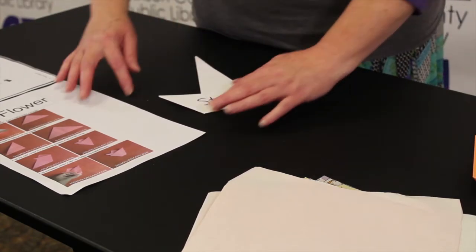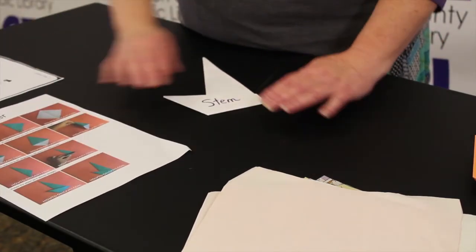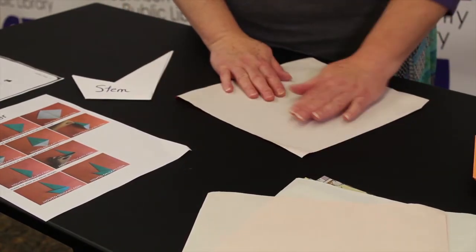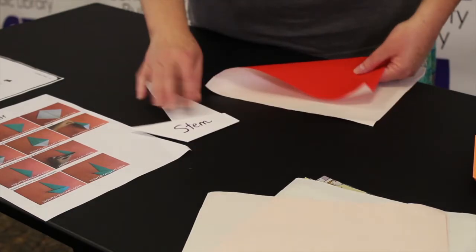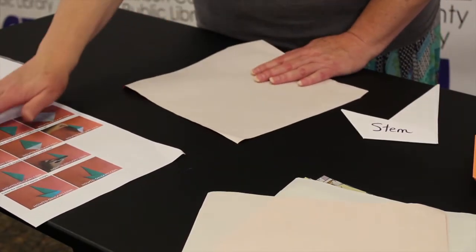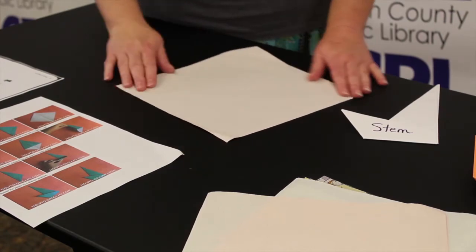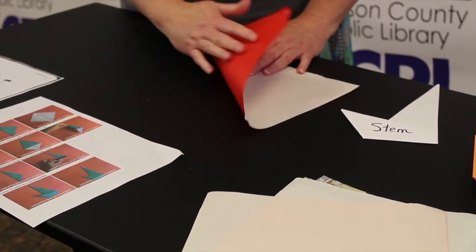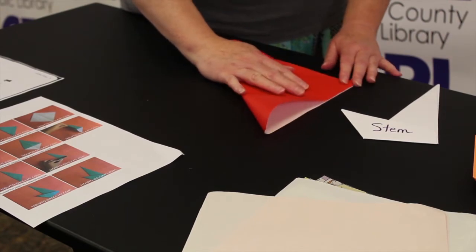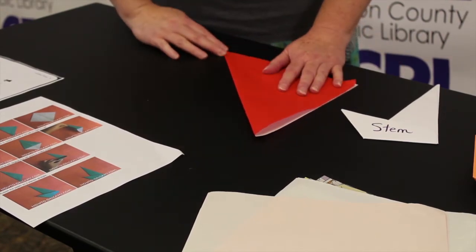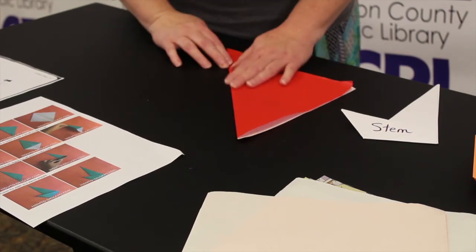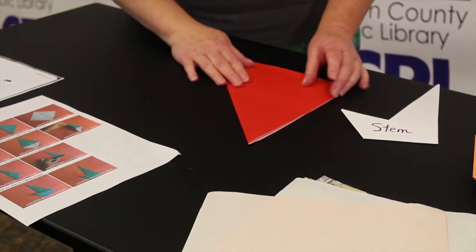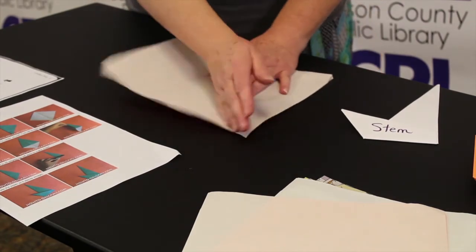And then we have our stem. I'm going to turn it over. And I said we're going to use our red. This red is the paper for the stem. So, oh, this one is a little bit different. The triangle is going a different way. We're going to move the triangle this way. Just like that. Good enough.